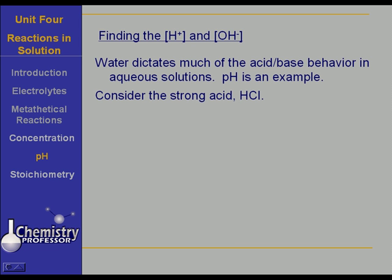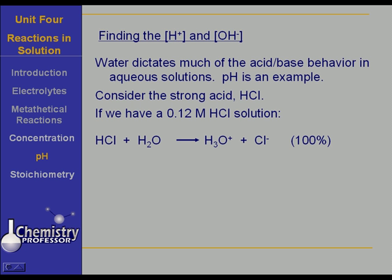Let's consider what we call a strong acid: hydrochloric acid. If we have a 0.12 molar hydrochloric acid solution, then we have the hydrochloric acid dissociating 100% in the presence of water, forming hydronium ions and chloride ions. We very often write the hydronium ion as hydrogen ion instead. If we have a 0.12 molar hydrochloric acid solution, we can expect to have a 0.12 molar hydronium ion solution and a 0.12 molar chloride ion solution.